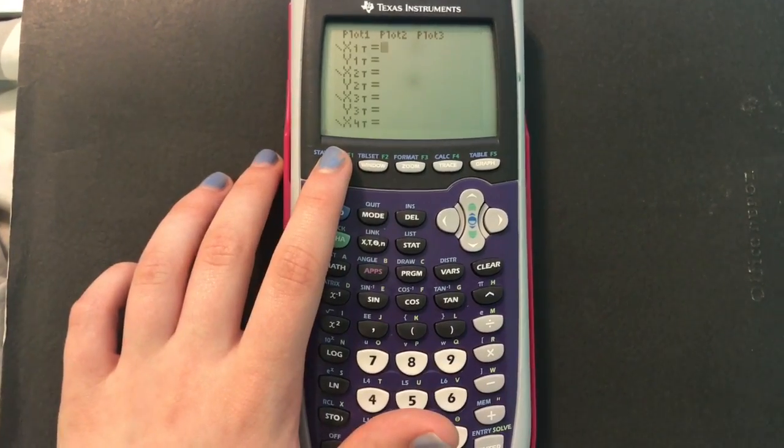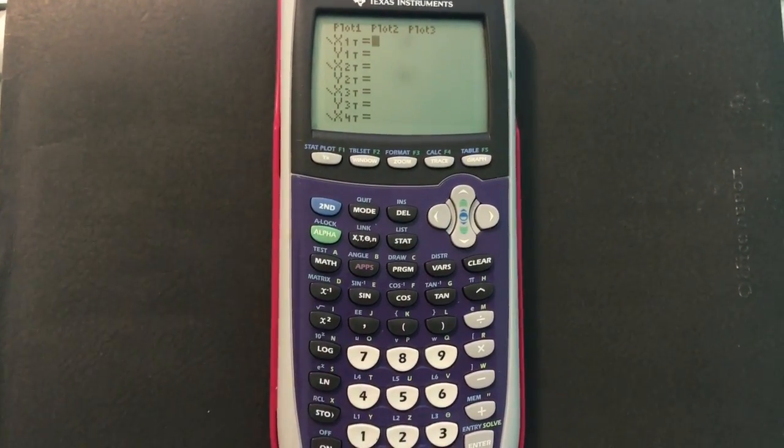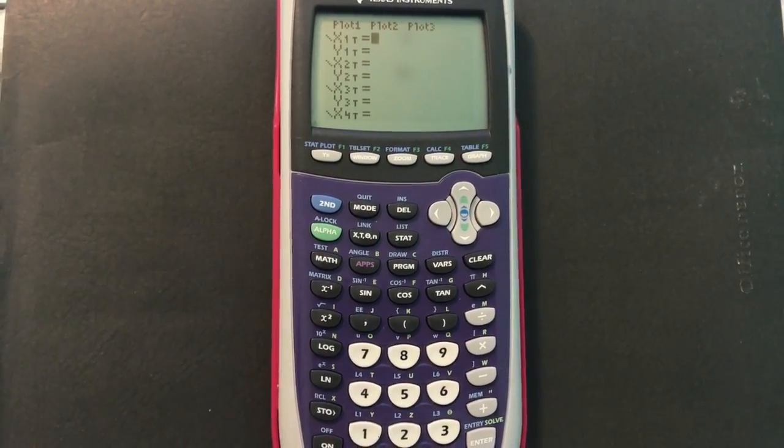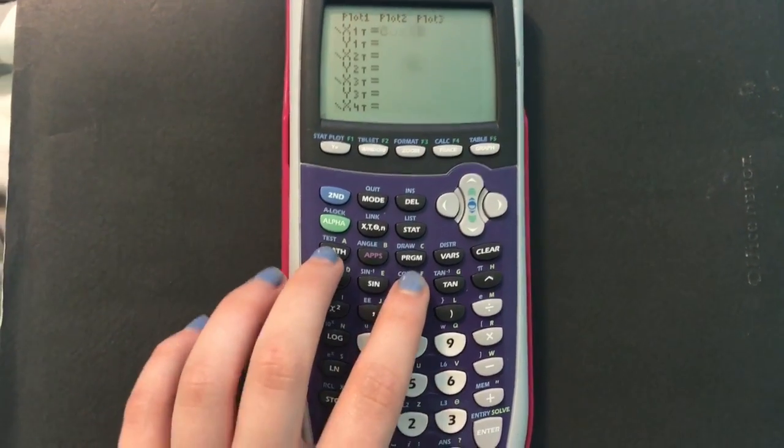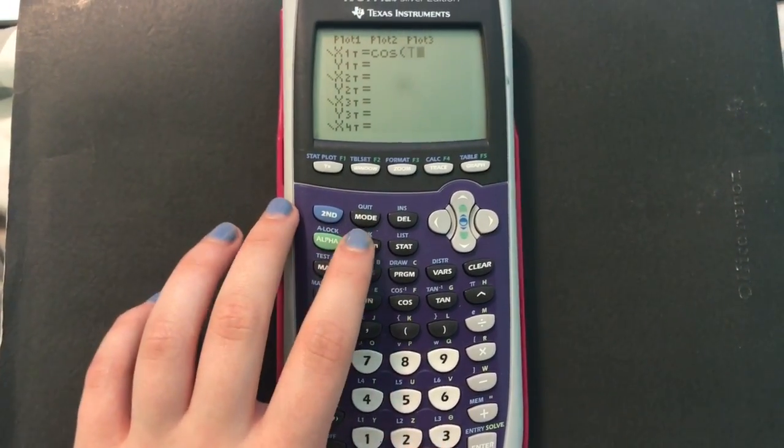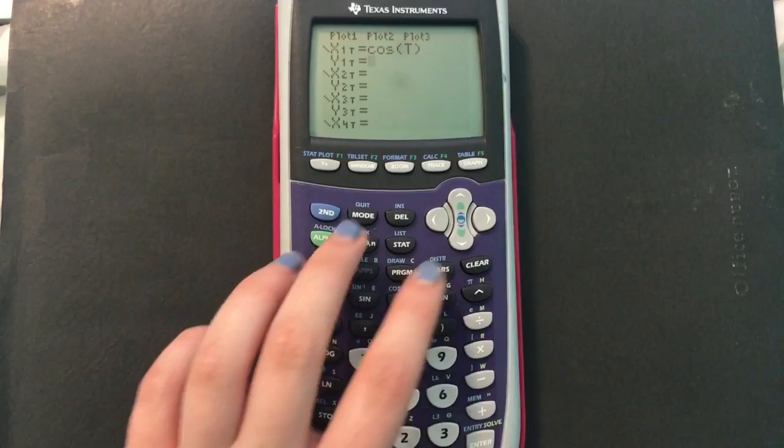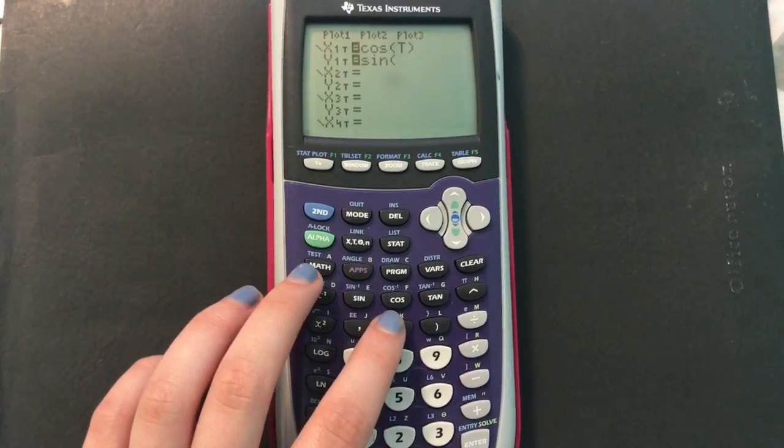Then you go to y equals, and you know that on a unit circle it's cosine comma sine, so the x1 is going to be cosine of t, and then the y1 is going to be sine of t.